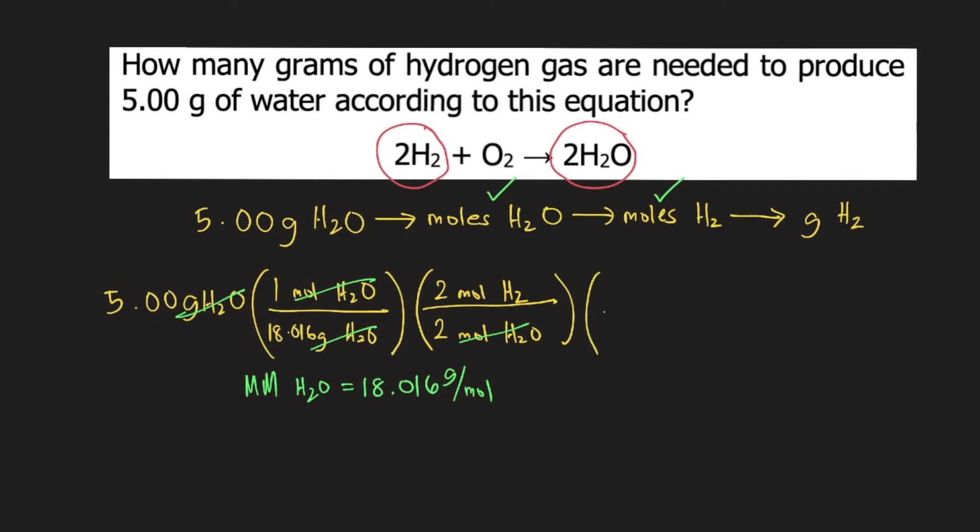Finally, in order to convert moles of hydrogen gas into grams of hydrogen gas, you need the molar mass of hydrogen gas. And that is 2.016 grams per mole.